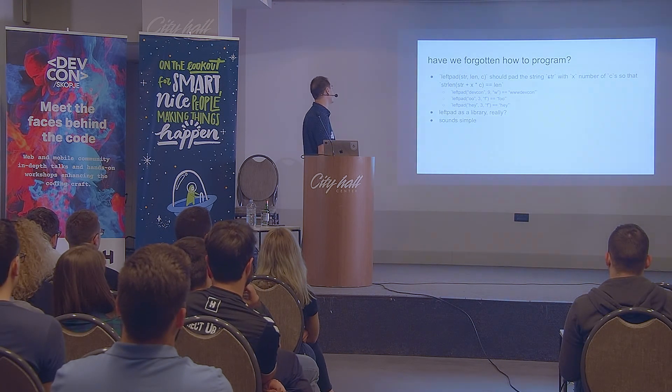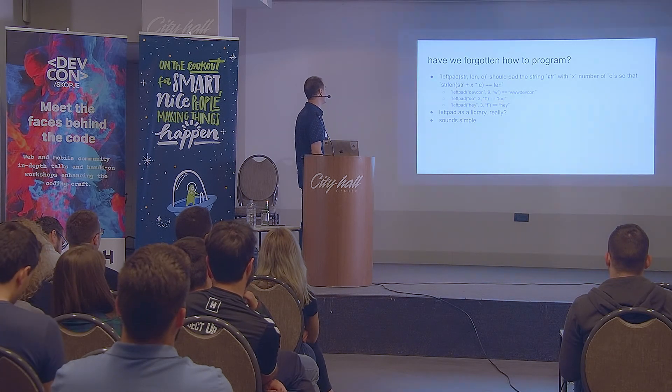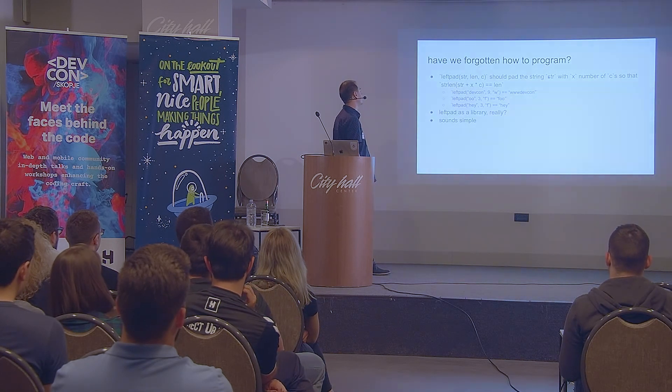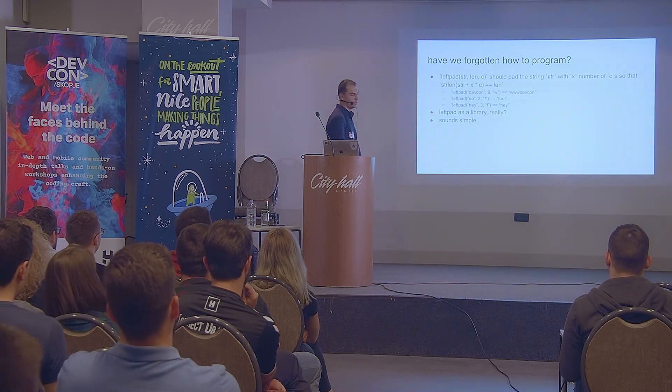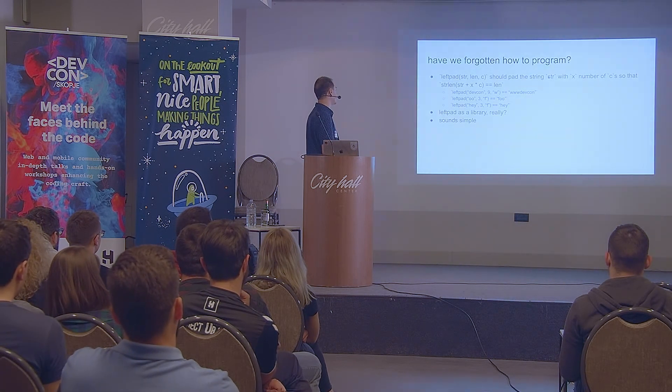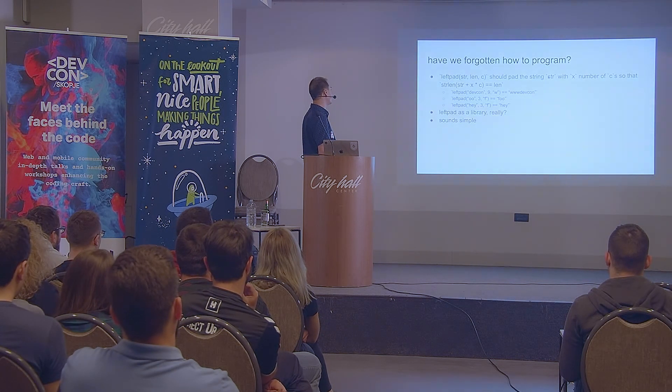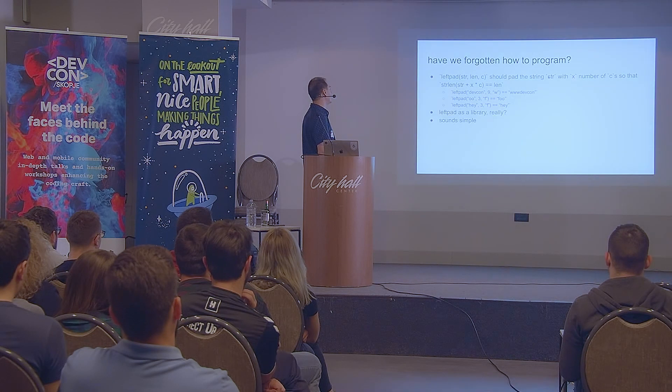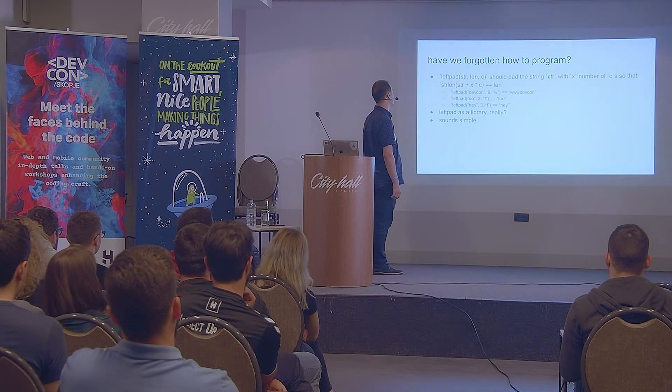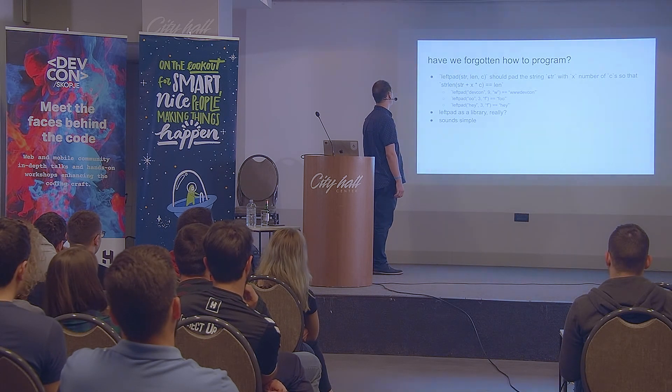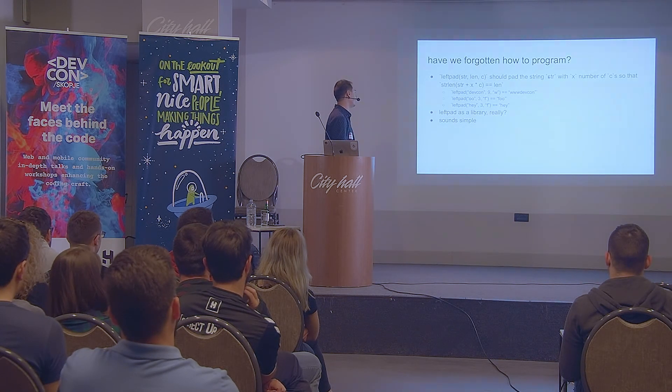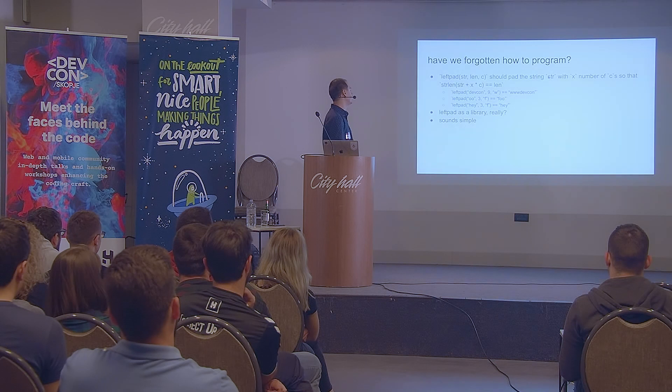It sounds simple. What left pad is doing actually is you supply the string, like for example, defcon. You supply a length as the second argument, which is the length of the output string that you're expecting. And as a third argument, you're supplying a character that should be prepended to the original string, first argument, prepended up until length of 9. So for defcon 9w, we get www.defcon.